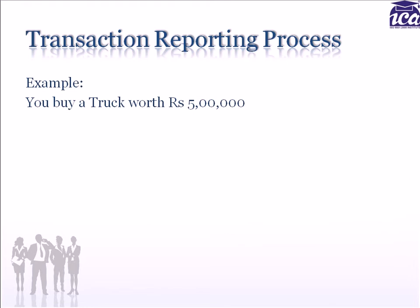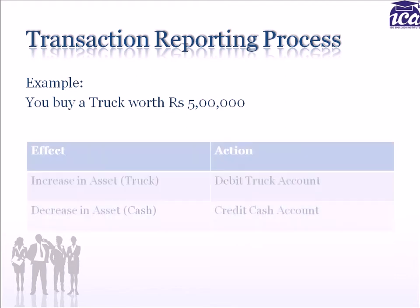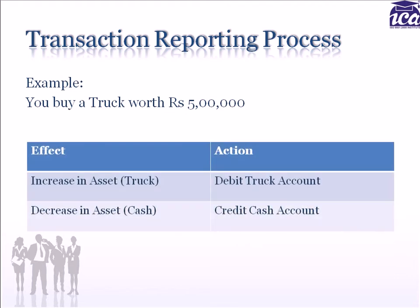Let's take another example. If you bought a truck and paid cash for the purchase — what comes in? Truck. So you debit the truck, which is the asset account. And what goes out? Cash. So you credit the cash account.